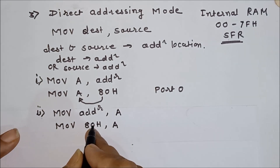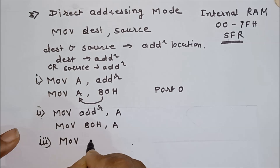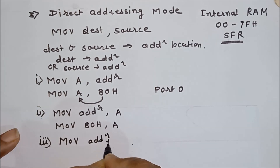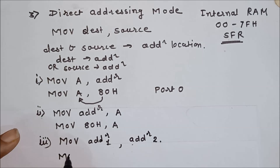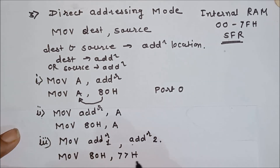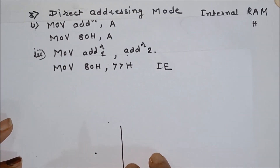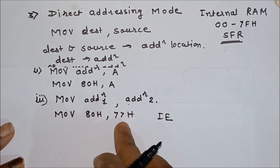In the third case, you can use both destination and source as address locations. For example: MOV 80H, 77H — where 77H is the address of the IE (Interrupt Enable) register. This instruction will move the contents of the IE register into the Port 0 register at address 80H. So both source and destination can be used as address locations.